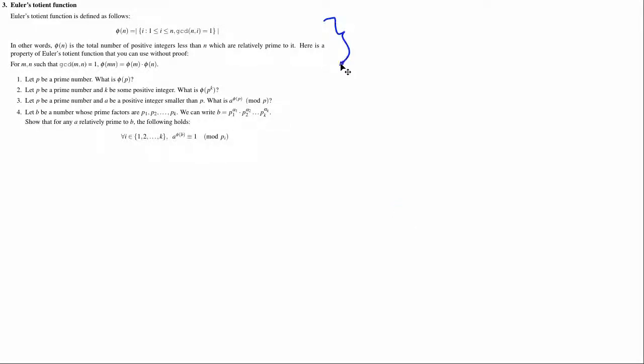Welcome to problem 3. Here you're given a lot of information, so I'll parse this with you. You're given a function phi, which is the total number of positive integers less than n which are relatively prime.